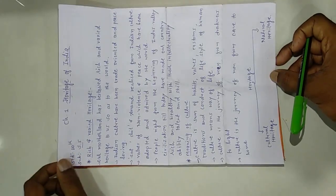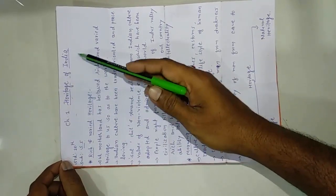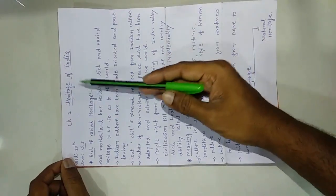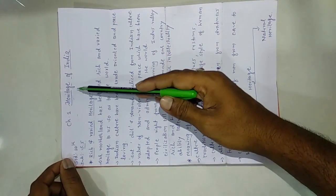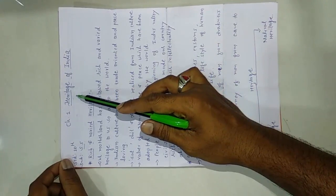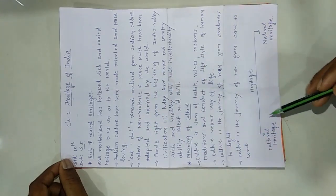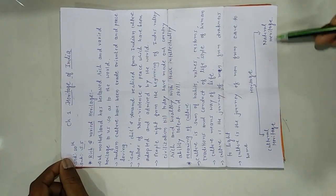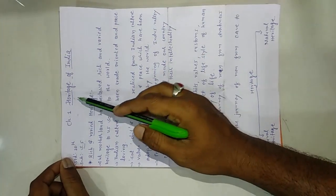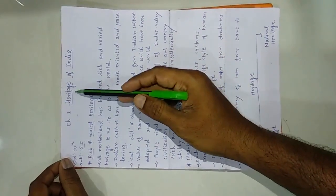Today we are going to learn Standard 10 Social Science, Chapter 1: Heritage of India. When we hear the word 'heritage', we should first understand what this word means. Heritage means whatever we get or obtain from generation to generation — that is called heritage. In this chapter, we are going to learn about two different types: cultural heritage and natural heritage.